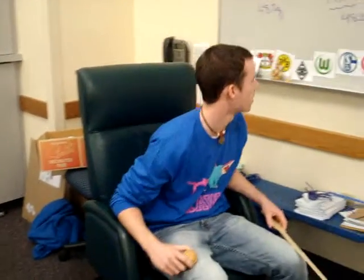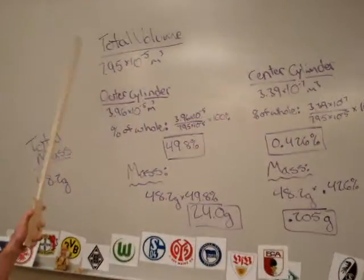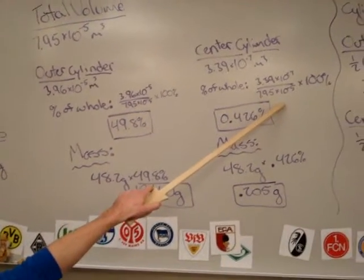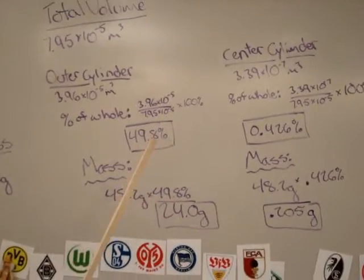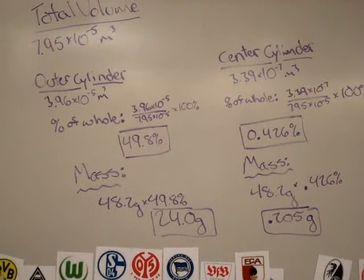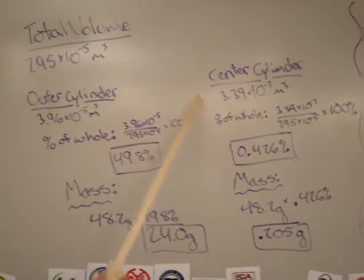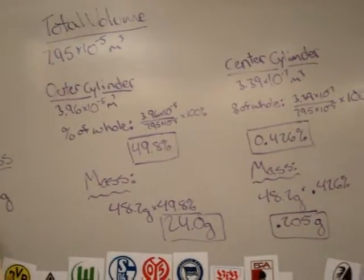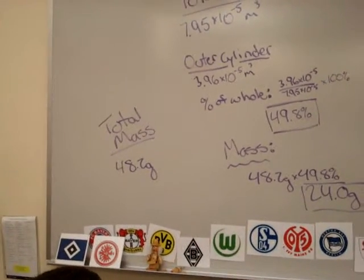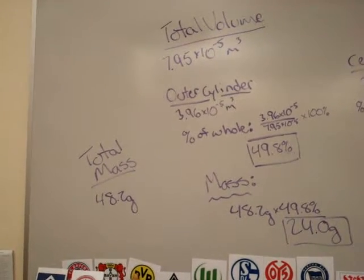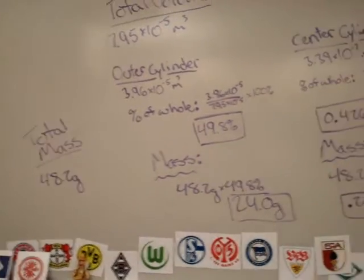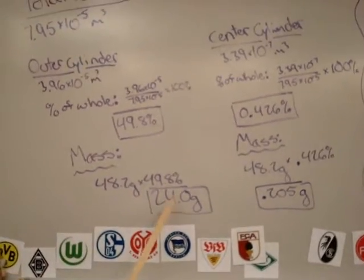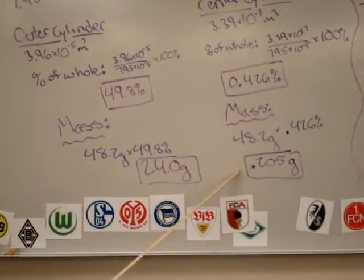So, what is the point of finding all these volumes? Well, since we know the volumes now, we can set up a proportion from which we can find how much each component, how much the mass is. We did that using the total number underneath each of the smaller volumes. And we were able to find that each of the outer cylinders was about 49.8% of the total volume. Opposed to that, the center cylinder was only 0.426% of the total volume. We know the mass of the entire yo-yo because we massed it earlier. And applying that to those percents, we got that each of the outer discs is 24.0 grams and the disc in the center is only 0.205 grams.